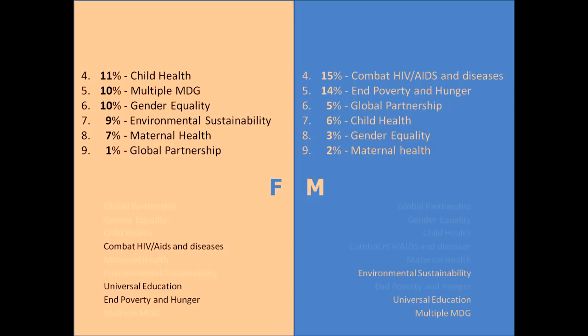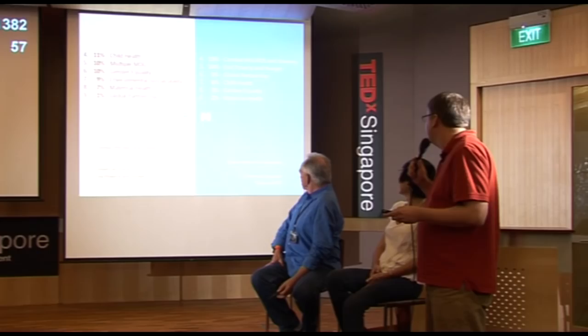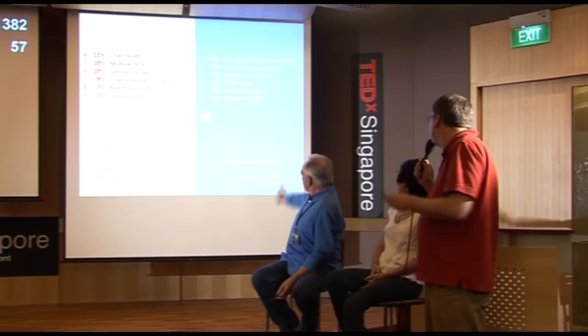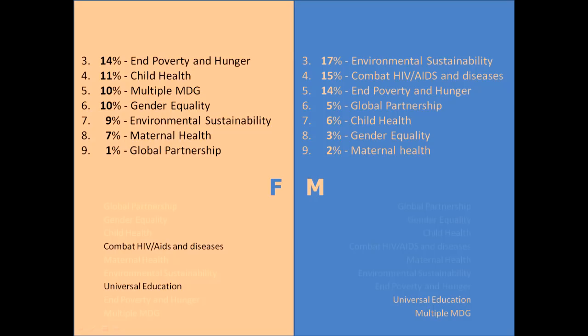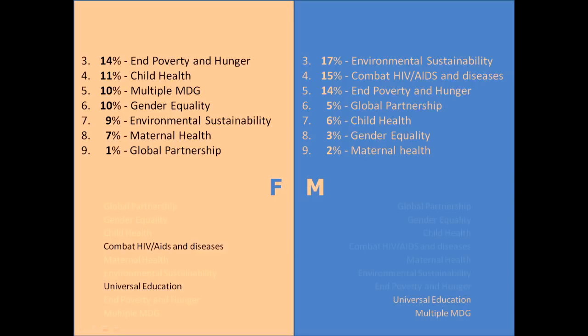So which would be number three? Carolyn, any guesses for the guys? Multiple MDG. And Paul? I think HIV-AIDS. Let's see the answer — both of them wrong.